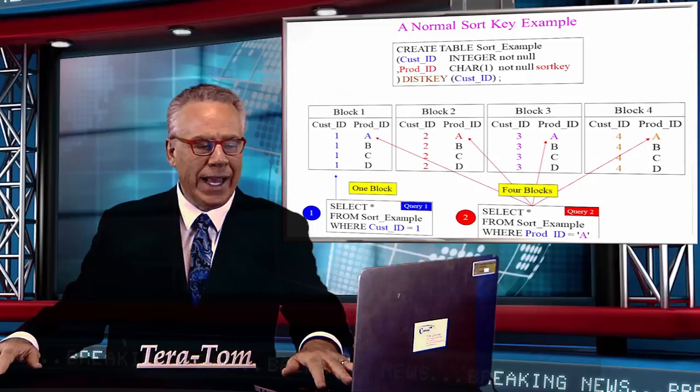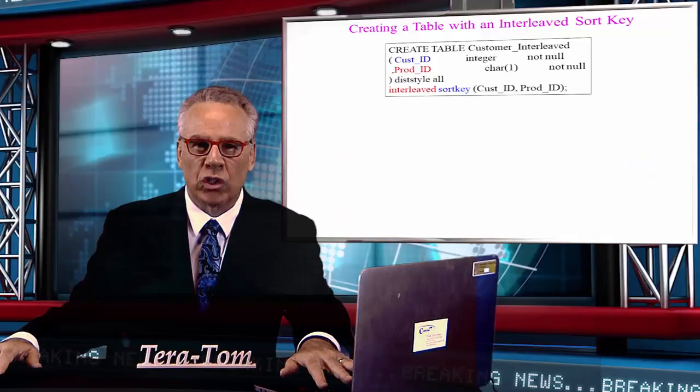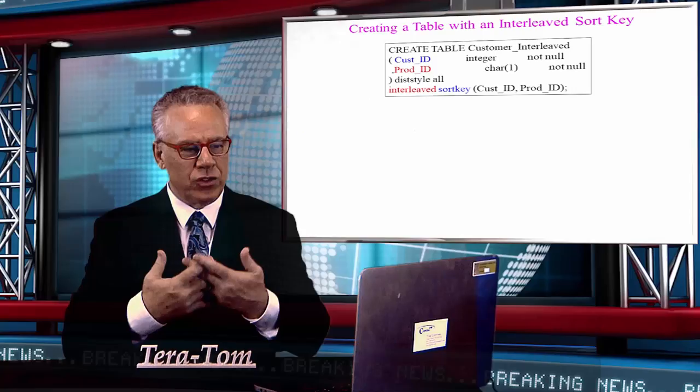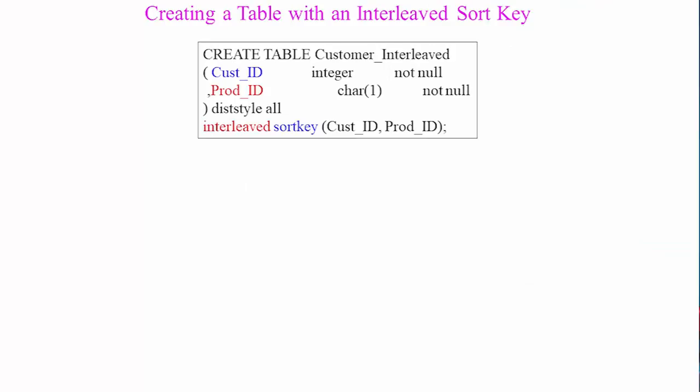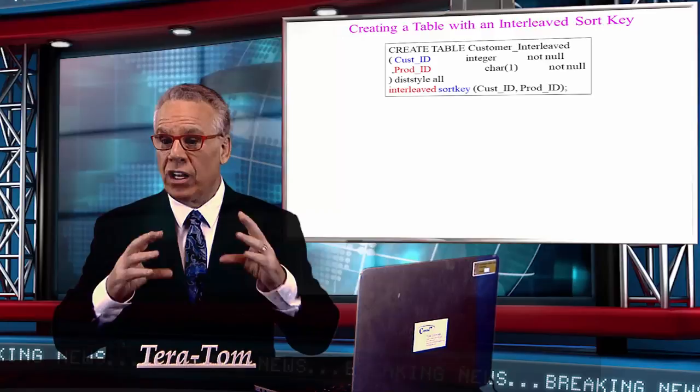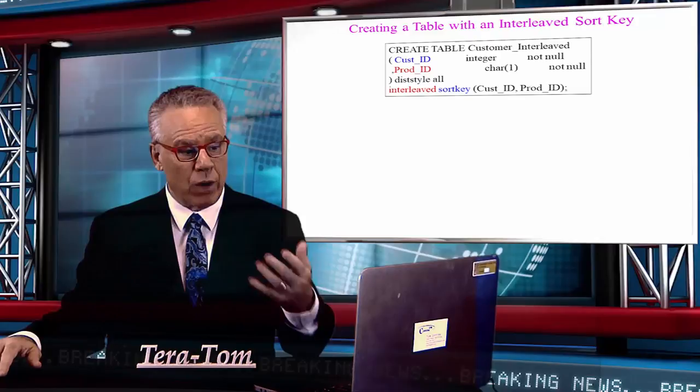Now, this is an interleaved sort key. What's really interesting about this is that an interleaved sort key gives equal value to both of the keys. So, we create the table. We've got cust ID, prod ID. We did a distyle of all, so it's copying to each one of these slices, the entirety of the entire table. So, this is really now representing one slice. And now, we have an interleaved sort key on both cust ID and prod ID.